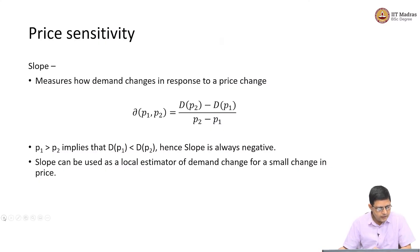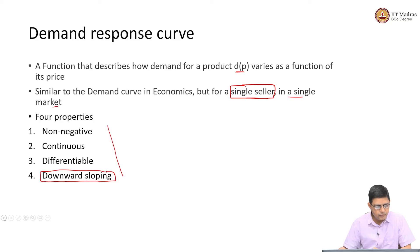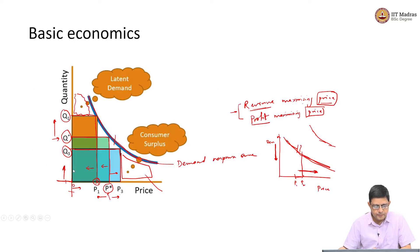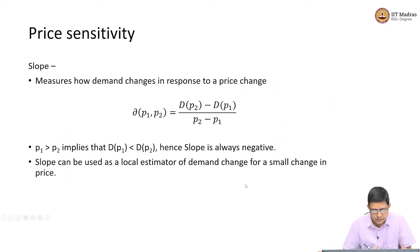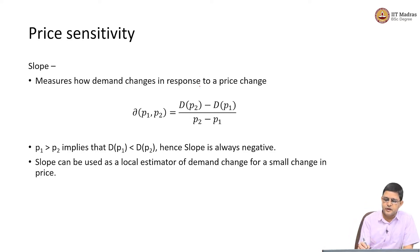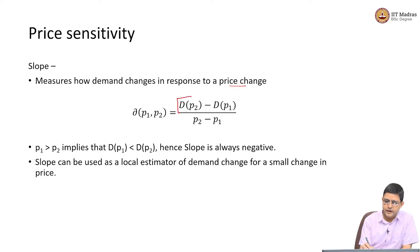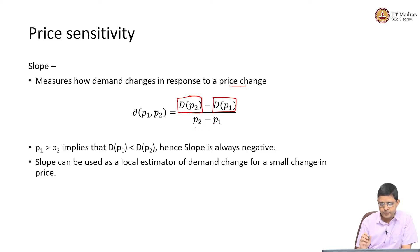There are two ways of looking at how we measure price sensitivity — how sensitive demand is to price. The first way is the simple slope, which is how much demand changes in response to a change in price. It is essentially the change in demand at price point P2 minus demand at price point P1, divided by P2 minus P1.